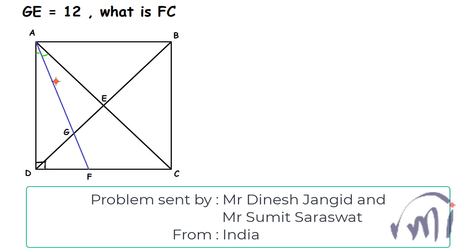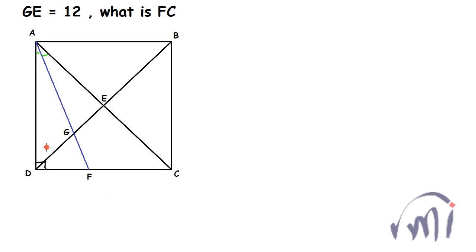Here we have a problem sent by Mr. Dinesh Youngit and Sumit Sarswath from India. In this problem we have a square ABCD and they have drawn two diagonals AC and DB. Both the diagonals intersect each other at point E. They have drawn the angle bisector of angle DAC and that angle bisector meets side DC at point F. We are given that GE is equal to 12, and we have to find length FC.